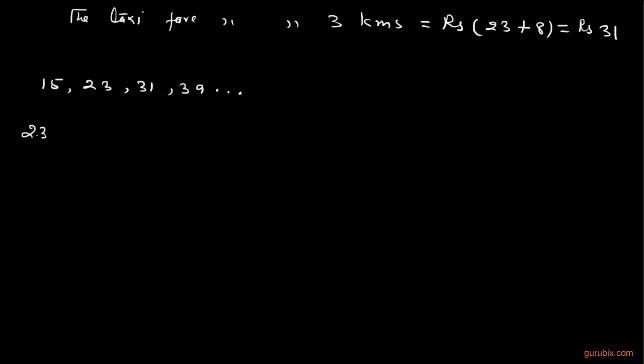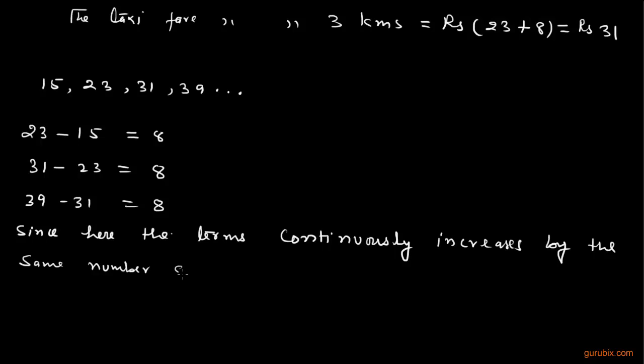if we subtract 15 from 23, we get 8. If we subtract 23 from 31, we get 8 also. And if we subtract 31 from 39, we get 8 at this stage also. So, since here the terms continuously increase by the same number 8, the list forms an AP. This is the solution. Thank you.